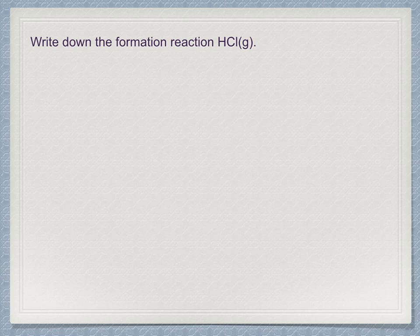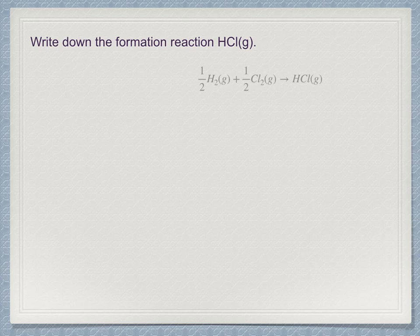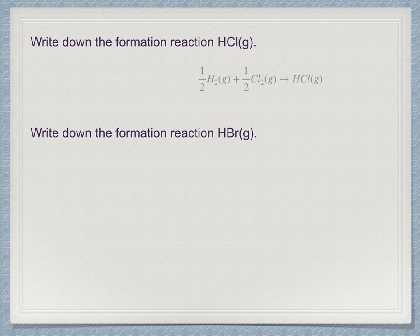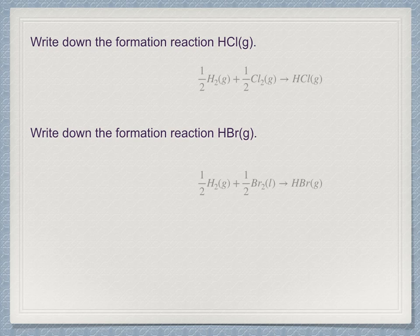Write down the equation for the formation of hydrochloric acid in the gas phase. Here's the correct answer — note the phases of each species involved. Another one is the formation of hydrobromic acid, HBr, in the gas phase. Note how the phase of the bromine is given as a liquid, while the chlorine above was a gas.